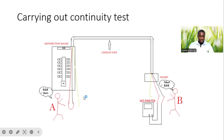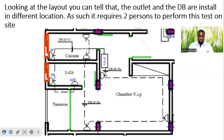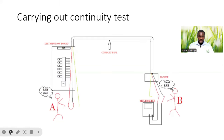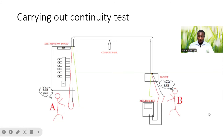Carrying out continuity tests — this is what has to be done. As mentioned, we require two different persons to conduct this test. We have a DB installed in one location and socket outlets in different locations, so it requires two persons. As you can see in this picture, we have one person standing on the DB side, which is person A, and another person, B, standing on the field side or at the socket outlet. Either of them can take the multimeter and conduct the test, while the other person on the other side does the shorting.